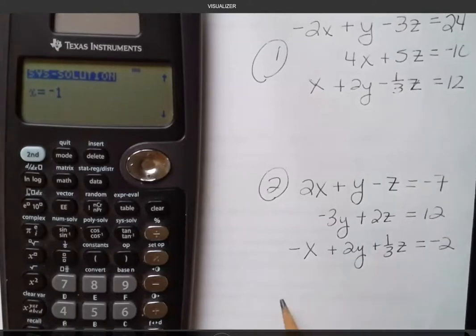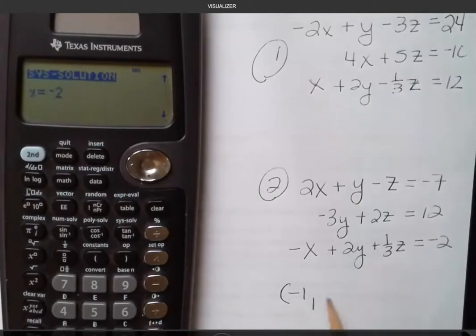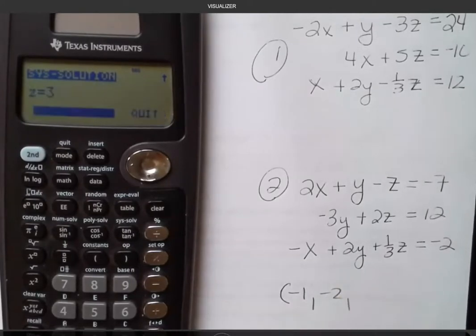This one's really nice because it came out nicely where I have x is negative 1, y is negative 2, and z is 3.